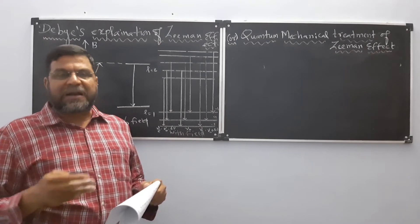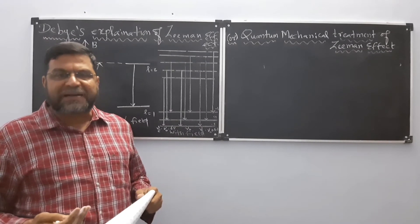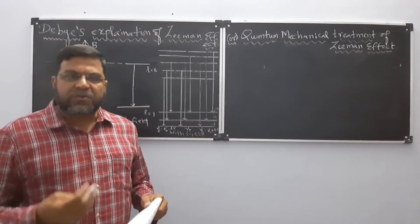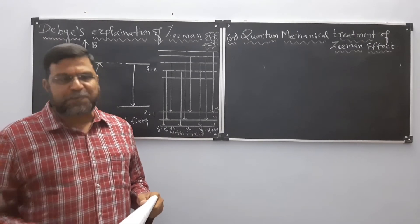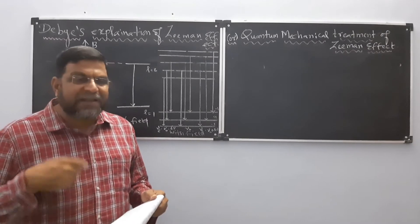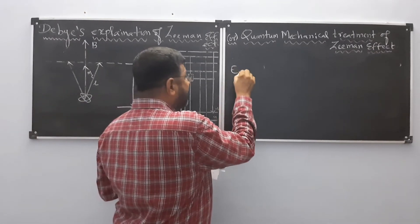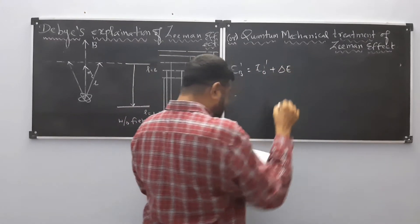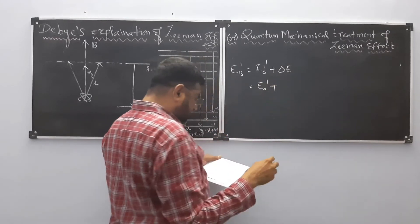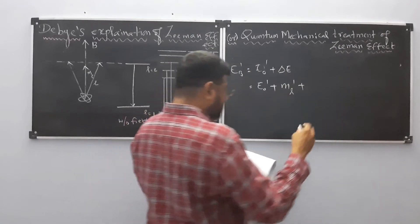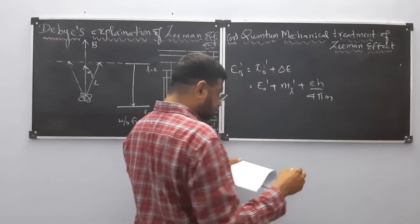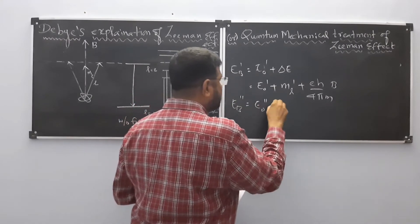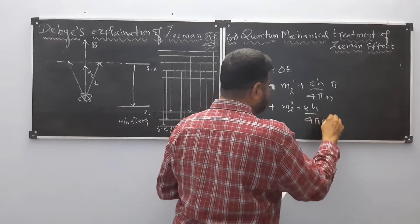Suppose you take a spectral line and apply a magnetic field. If splitting occurs, then Debye's explanation is satisfied. If there is no splitting, Debye's explanation is not valid. Therefore Debye's explanation holds only when splitting occurs. This is represented as E'V = E₀ + delta E = E₀' + M'L × (eH/4πm) × B, and similarly E''B = E₀'' + M''L × (eH/4πm) × B.